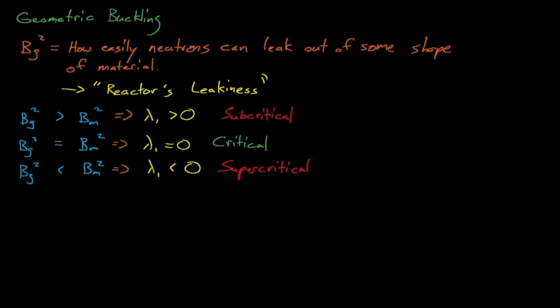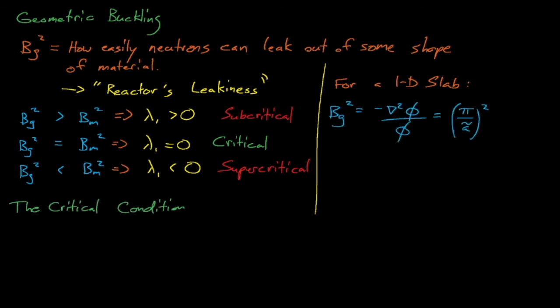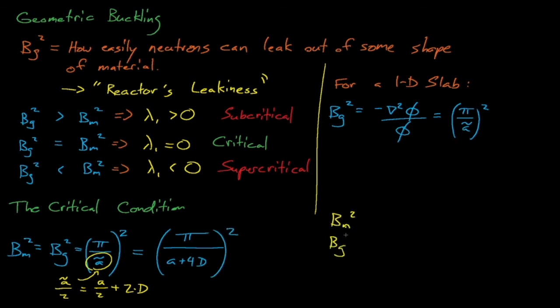Our previous boundary condition, that the flux must equal zero at the extrapolated boundary, causes our geometric buckling to only depend on the reactor's shape. The geometric buckling has no dependence on the reactor's fuel or cross sections. A five centimeter radius sphere of highly enriched uranium will have exactly the same geometric buckling as a five centimeter sphere of low enrichment uranium. However, the HEU sphere is more likely to be critical or supercritical because it will have a larger material buckling than the LEU fuel.